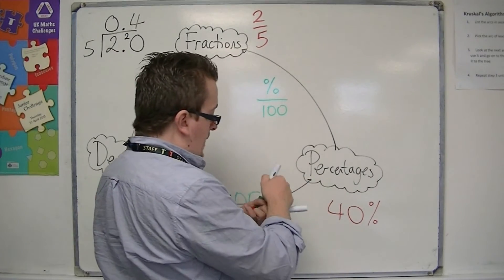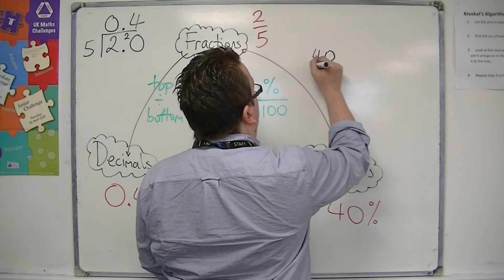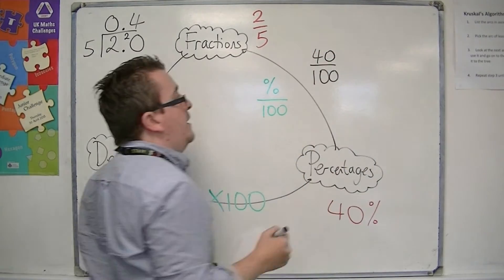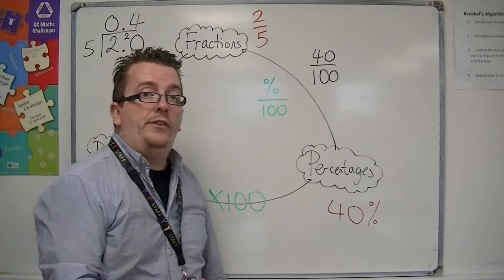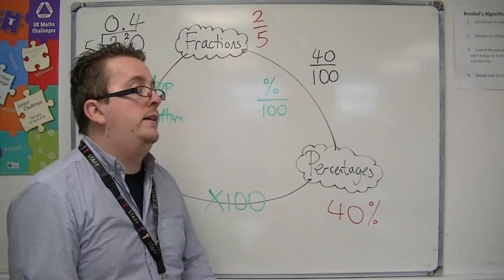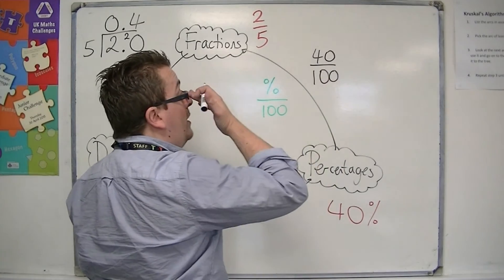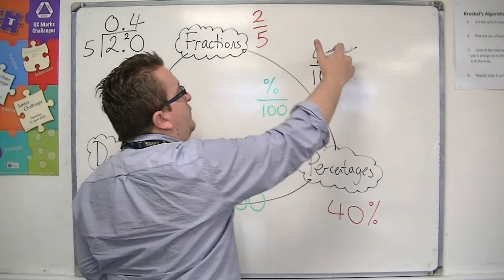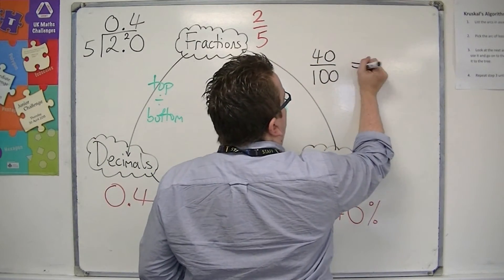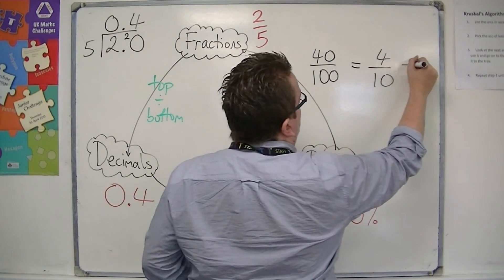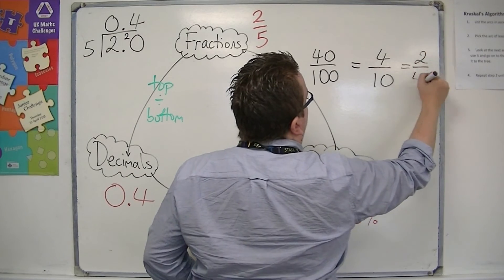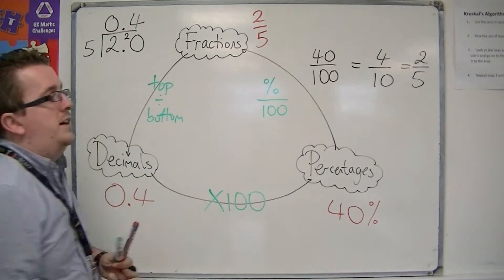So 40 out of 100 as a fraction. And we can see that these fractions aren't exactly the same in their current format, so we cancel down the fraction. We simplify it. You can divide top and bottom by 10, so that would be 4 over 10, and then you can divide top and bottom by 2. So you get 2 fifths, which is exactly what we started with.